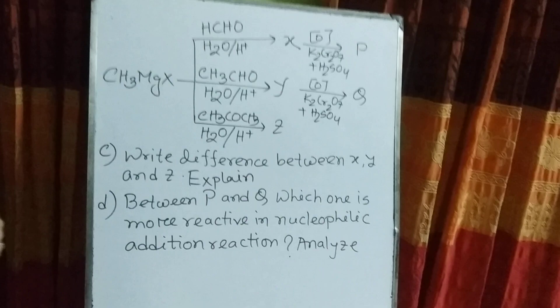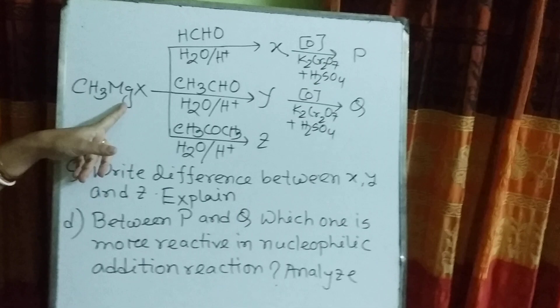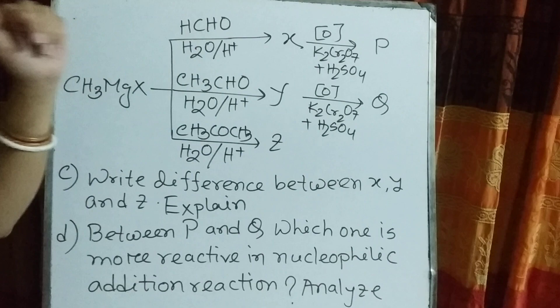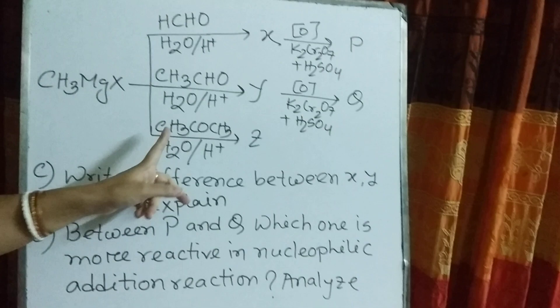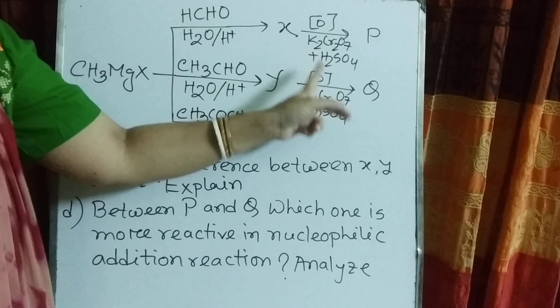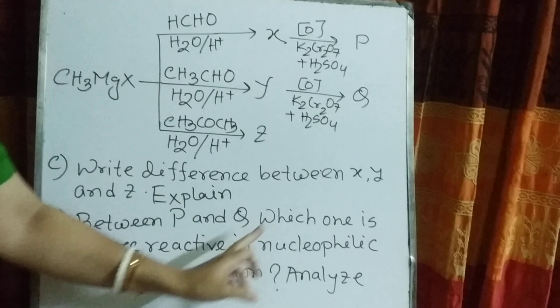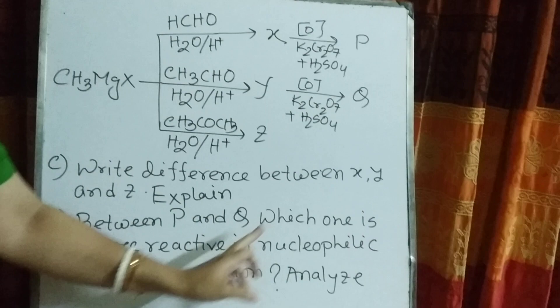Now I will discuss a creative question. The compound CST-MGX: in my previous class I mentioned this is a Grignard-created product. HCHO with H2O in H⁺ (acidic medium) is hydrolyzed and forms X. CST-CHO forms Y. CST-CO forms Z. X is oxidized to form P; Y is oxidized to form Q. The question is: write the difference between X, Y, and Z, and between P and Q, which one is more reactive in nucleophilic addition reaction?